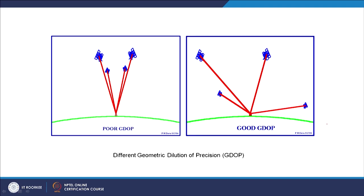For example, though a receiver may get signals from 4 satellites, if they are very close by the GDOP is poor and position estimation is inaccurate. But if those same 4 satellites are spread out, with good distribution in the sky plot, then good GDOP is obtained.